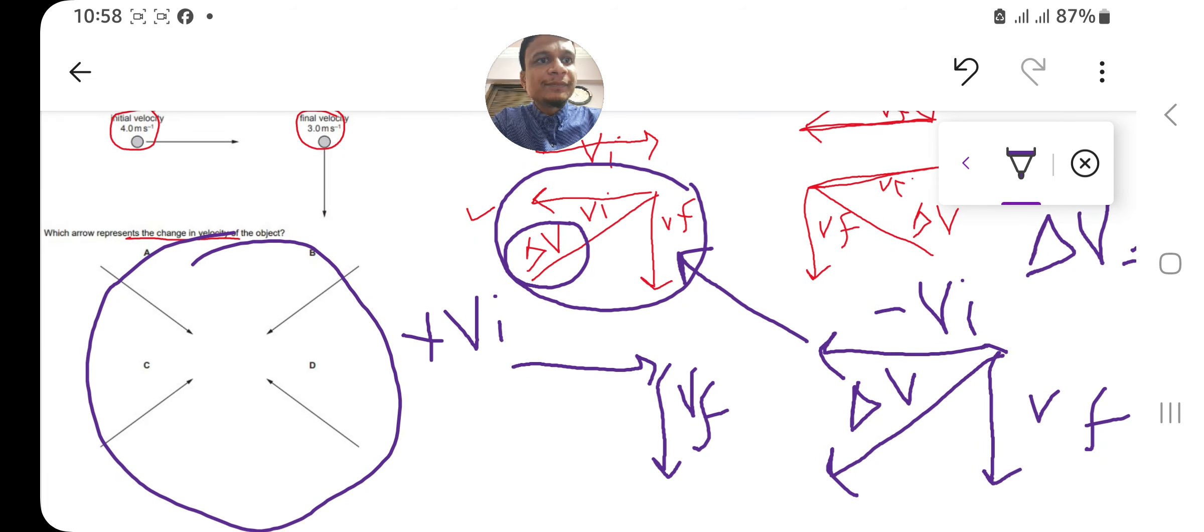option B is correct—this is the change in velocity. Hope you are getting my explanation, a very easy explanation from my side. Kindly like, share, and subscribe my channel so that you can have more math and physics videos. Thank you.